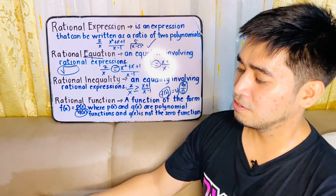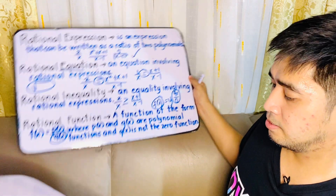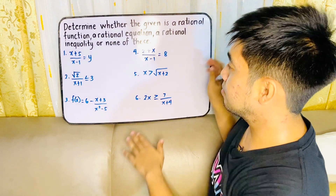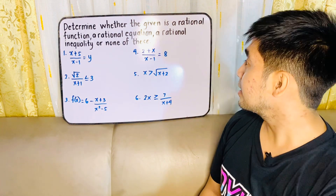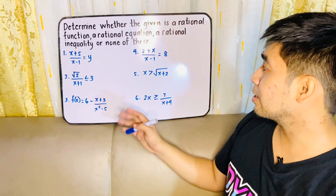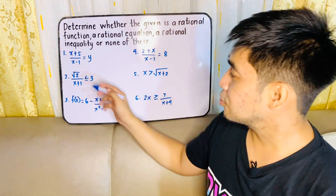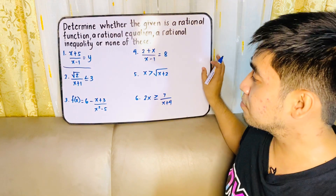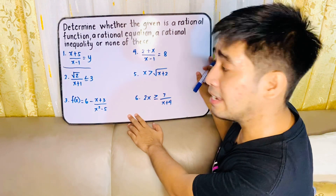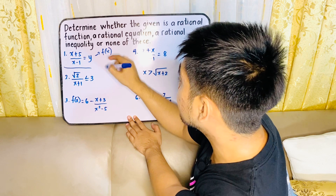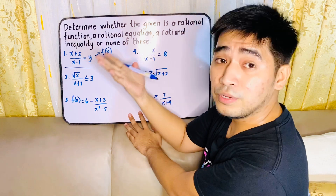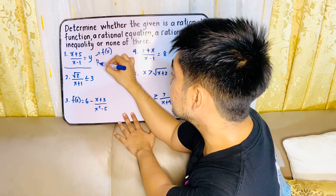So let's now answer these problems. We're asked to determine whether the given is a rational function, a rational equation, a rational inequality, or none of these. For the first one, we are given x plus 5 over x minus 1 is equal to y. Anong sabi natin kanina kapag may y? That is also equal to f(x). Therefore, this is a function — we could say that this is a rational function. For the second one, we are given square root of 2 over x plus 1 is less than or equal to 3. Since it involves roots or radicals, we could say that it is none of these.